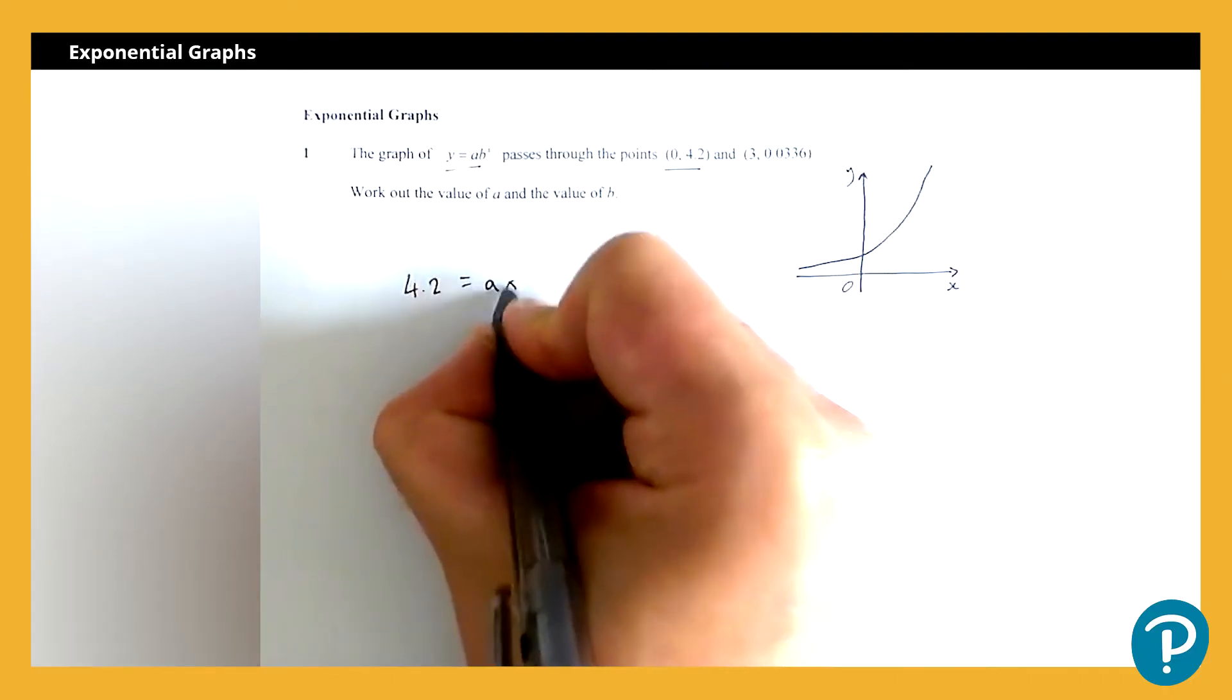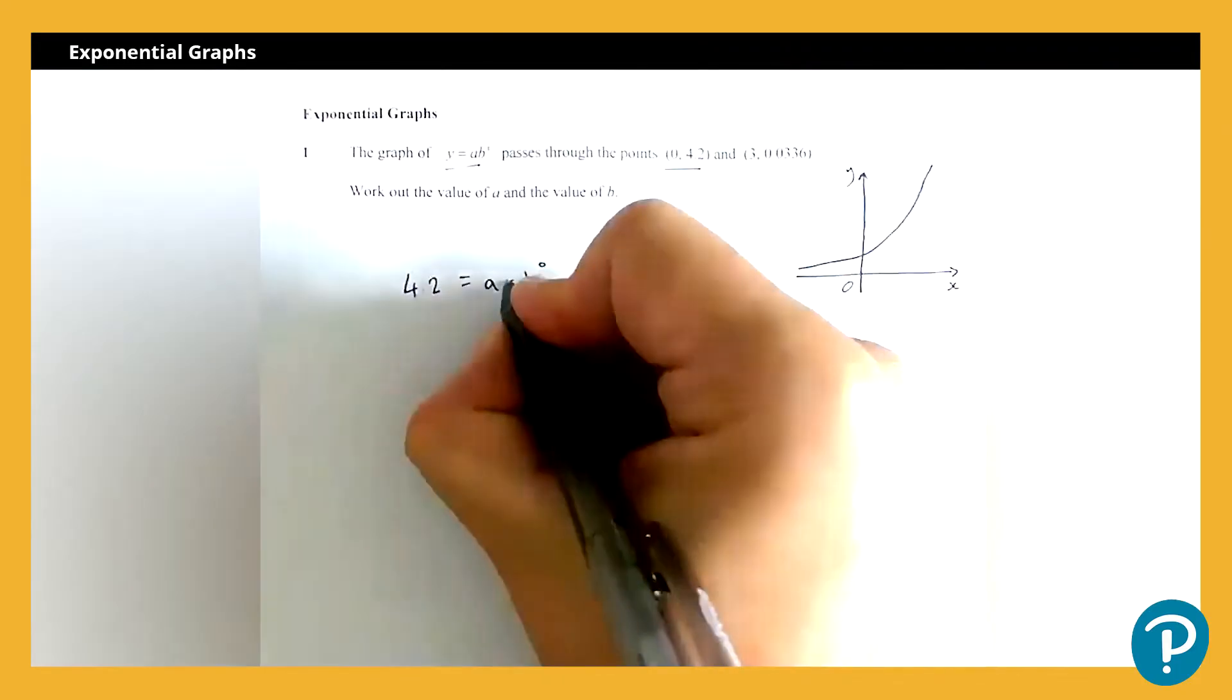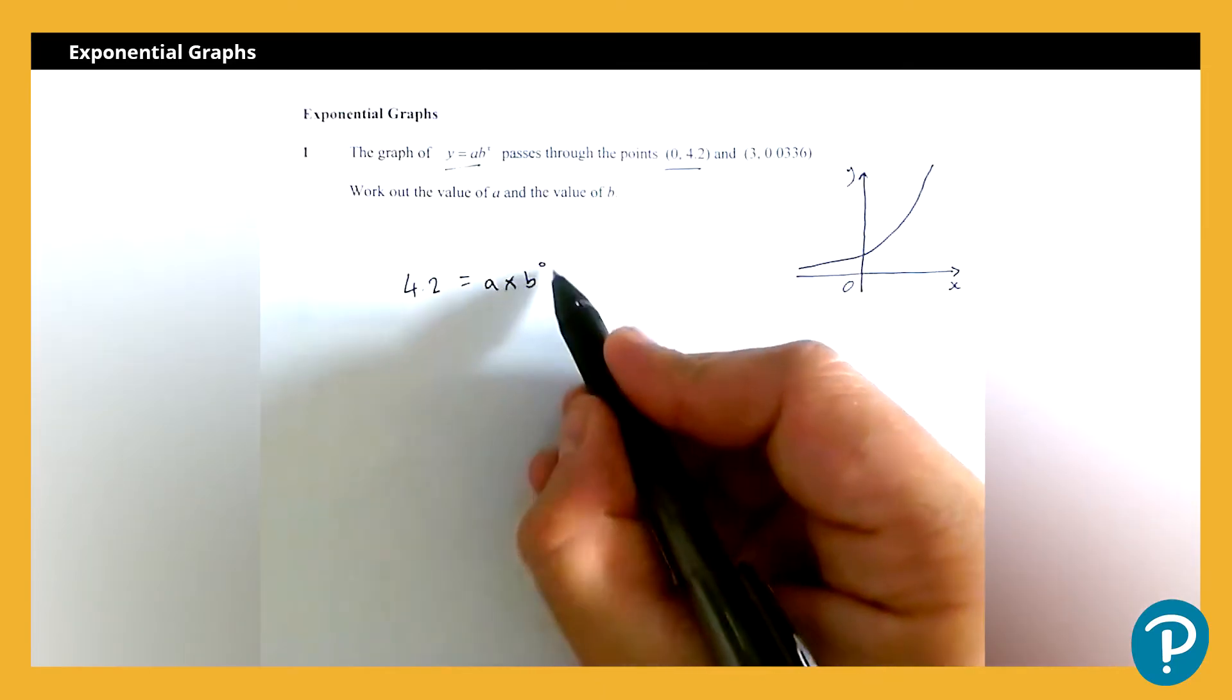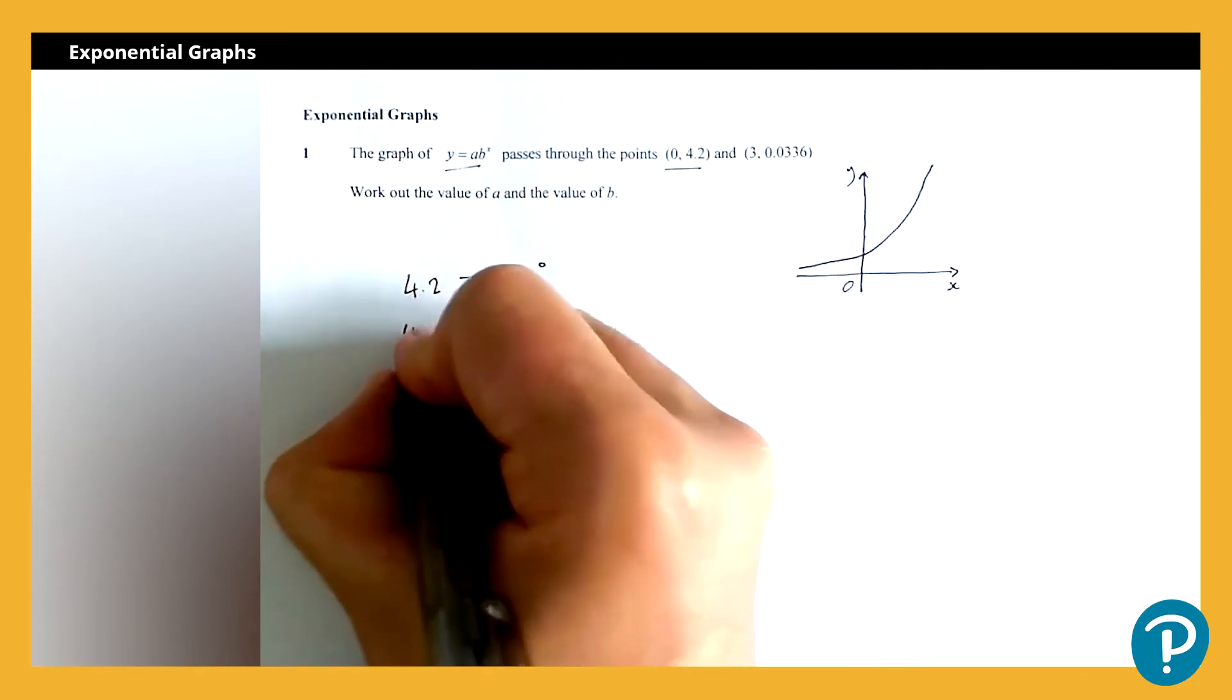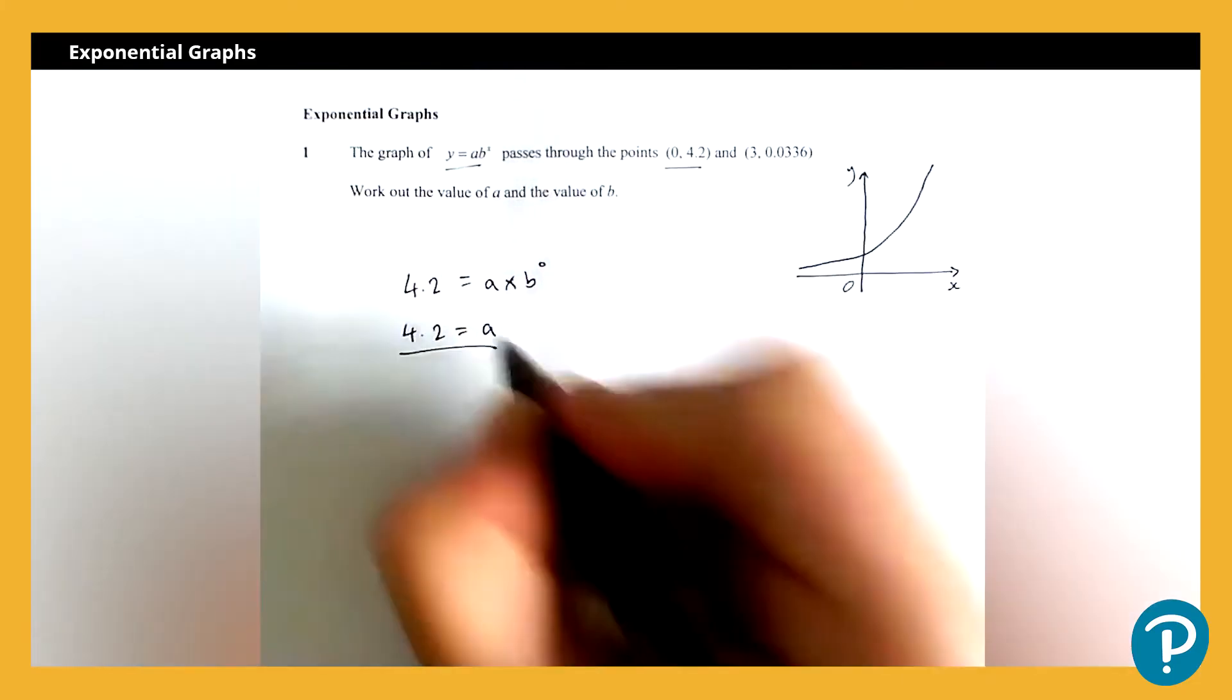Now we should know that b to the power zero, just like anything else to the power zero, is one. So then 4.2 is equal to a. I have my first value.